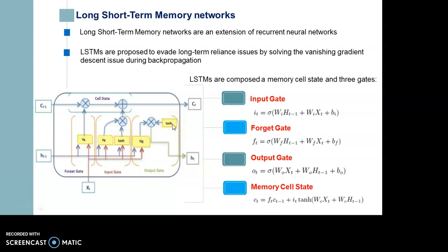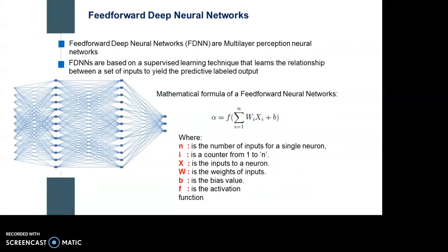The second model is Feed-forward Deep Neural Networks. Feed-forward deep neural networks are based on supervised learning techniques that learn the relationship between a set of inputs and predictive labeled outputs. In feed-forward neural networks, the architecture consists of three types of dense layers: namely input layer, output layer, and hidden layer. They are considered the computational engine of the network that decides the complexity of the network.